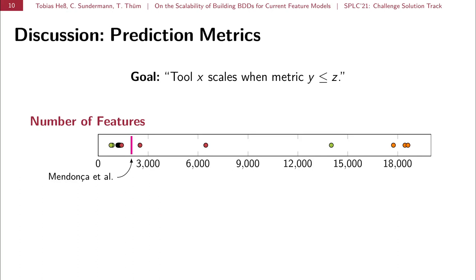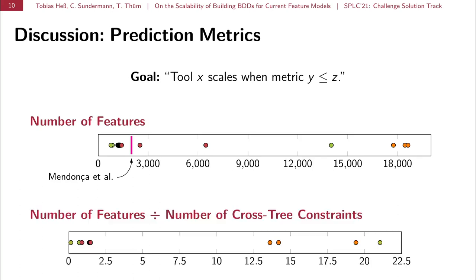And we also see that this number of features apparently is not really usable as a prediction metric. And that the threshold of Mendonca et al. of 2000 features does not appear to transfer to real-world feature models or current real-world feature models. As, for example, the CDL feature models are well beyond the threshold of 2000 features but we failed to build a BDD for all of them. Another metric which appears in a number of earlier research is the quotient of the number of features divided by the number of cross-tree constraints. And again, we can see that in both ends of the scale, we do quite well. But very close to the bottom two feature models for which we were able to build a BDD, we see there are the failures for which we could not build a BDD. So this quotient also does not appear to be a good prediction metric.